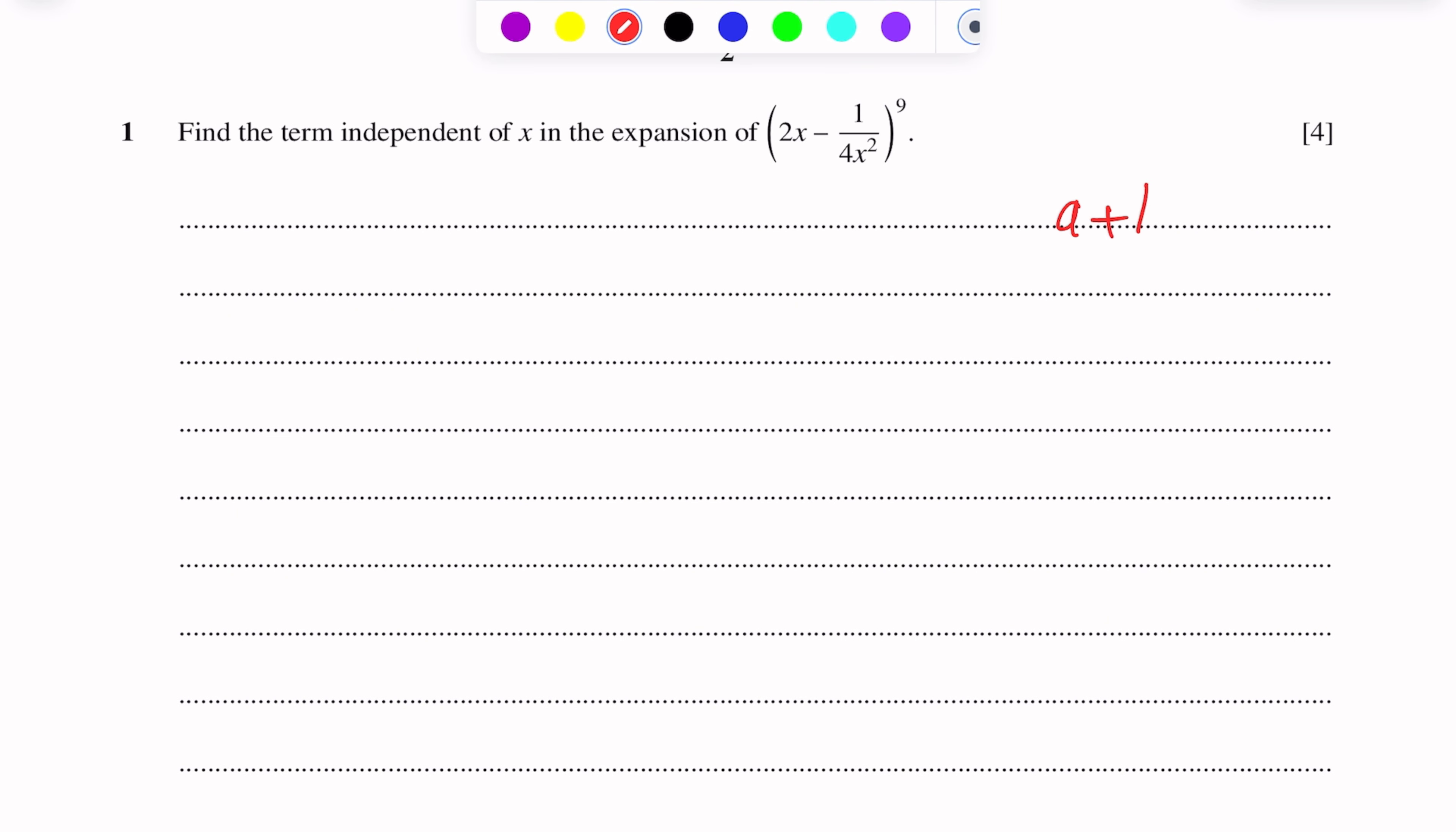For example, if we have (a + b)^n, to find a specific term we use the formula: nCr × a^(n-r) × b^r. This is the formula to find the specific term in the expansion of (a + b)^n.